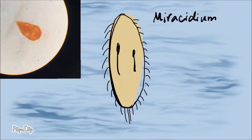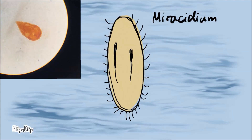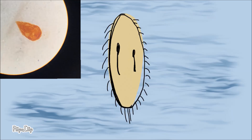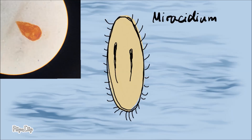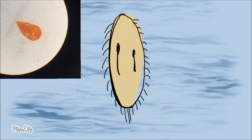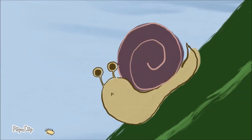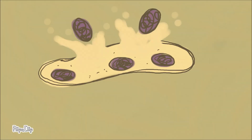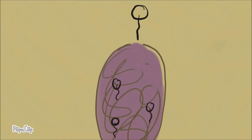At this stage, the larvae are flat and fragile, and their body is covered with cilia. They have an apical gland that secretes enzymes for invading the first intermediate host, which is a freshwater snail. Once a miracidium penetrates a snail, it will develop into other following stages inside the snail, which are sporocyst, redia, and cercaria.